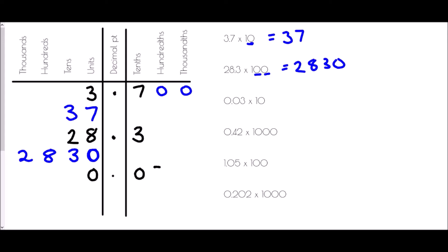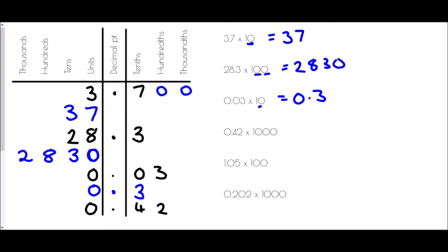Next, 0.03 times 10. There is a single zero, so all digits move one place to the left. The zero in the units goes to the tens, the zero in the tenths goes to the units, and the 3 from the hundredths moves to the tenths. We get 0.3 — we don't need the leading zero in the tens, so the answer is 0.3.